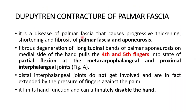It's a disease of the palmar fascia that causes progressive thickening, shortening and fibrosis of the palmar fascia and aponeurosis. Fibrous deterioration of longitudinal bands of the palmar aponeurosis on the medial side of the hand pulls the fourth and the fifth fingers into a state of partial flexion at the metacarpophalangeal and the proximal interphalangeal joint.